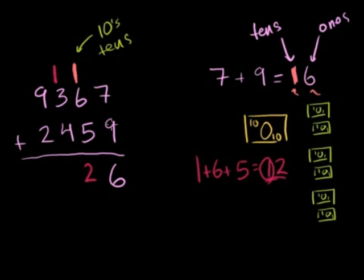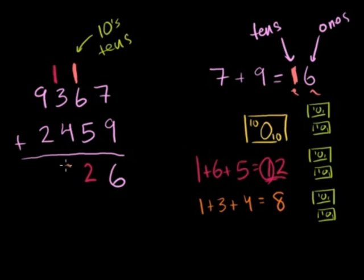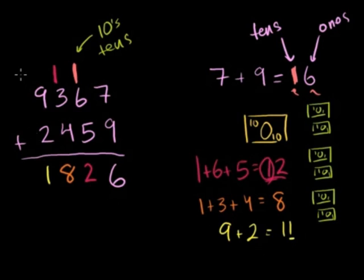In the hundreds place: 1 plus 3 plus 4 — 1 plus 3 is 4, plus 4 is 8. Nothing to carry. Then 9 plus 2 is 11: write the 1 down there, and since there's nothing to carry into, write the other 1 just like that. So 9,367 plus 2,459 is 11,826.